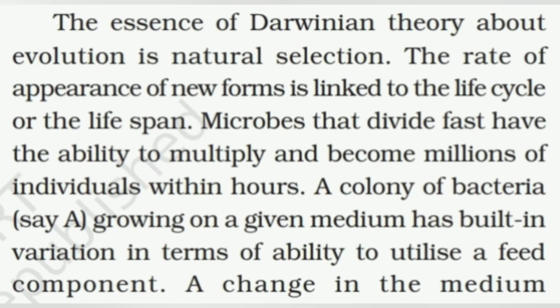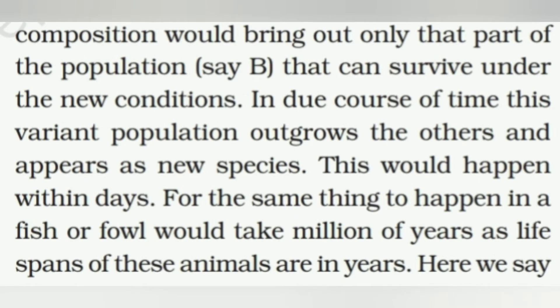The rate of appearance of new forms is linked to the life cycle or life span. Microbes that divide fast have the ability to multiply and become millions of individuals within hours. A colony of bacteria, say A, growing on a given medium has built-in variation in terms of ability to utilize a feed component. A change in the medium will bring out only that part of the population, say B, that can survive under the new condition. In due course of time, this variant population outgrows the others and appears as a new species — this would happen within days.